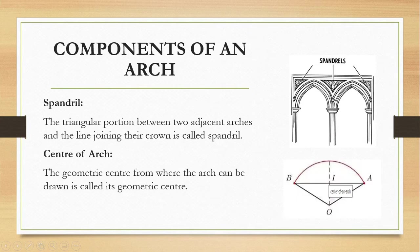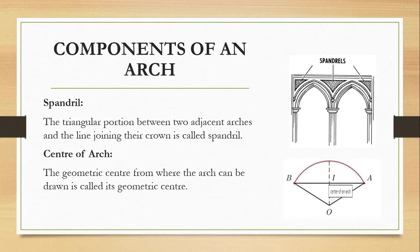The spandrel is the triangular portion between two adjacent arches and the line joining their crowns. For a single arch, the negative space at the side is the spandrel; for a series of arches, the inner negative space is also termed spandrel. The center of an arch is the geometric center from which the arch is drawn. We will explore how to design and draft the center in more detail when studying the types of arches.